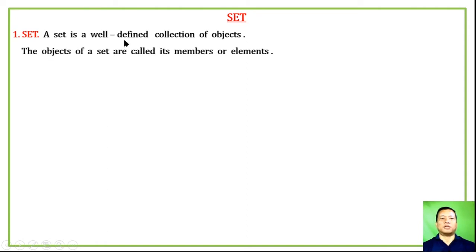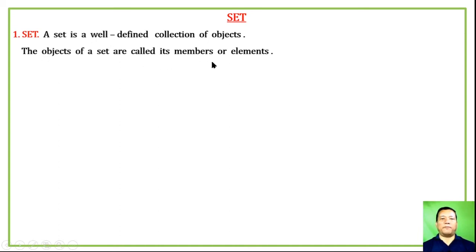If we cannot clearly determine whether an object belongs to a collection, that collection cannot be called a set. The objects of a set are called its members or elements.